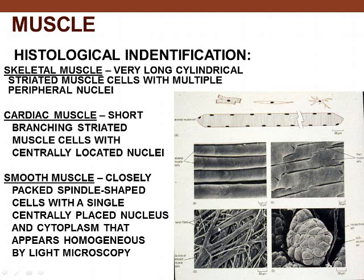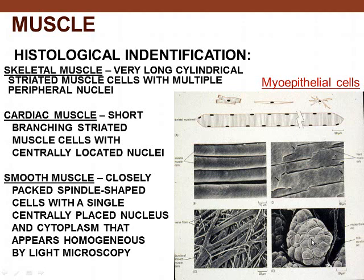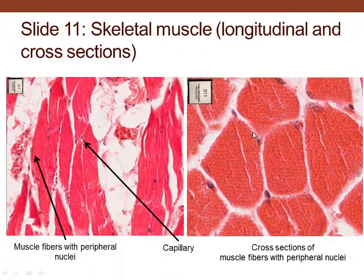Another type of cell is myoepithelial cells. Here we see myoepithelium that would surround a sweat gland to cause secretions to occur — it forms a little basket or net around it that squeezes down. We also have myoepithelium in the dilator muscle of the iris.